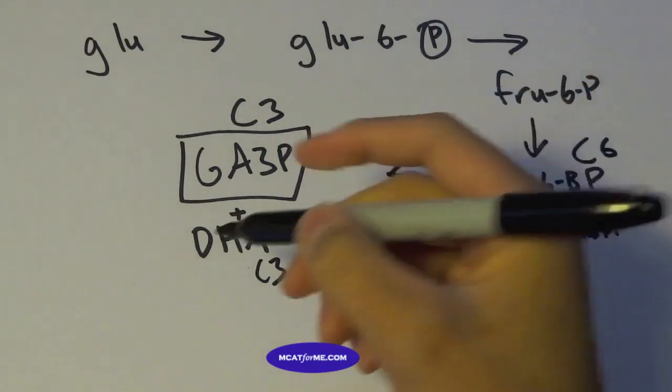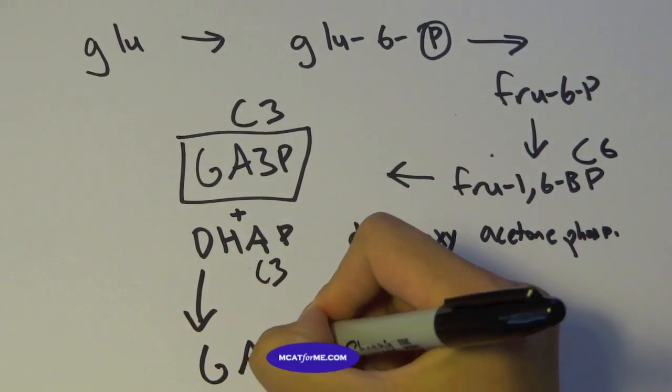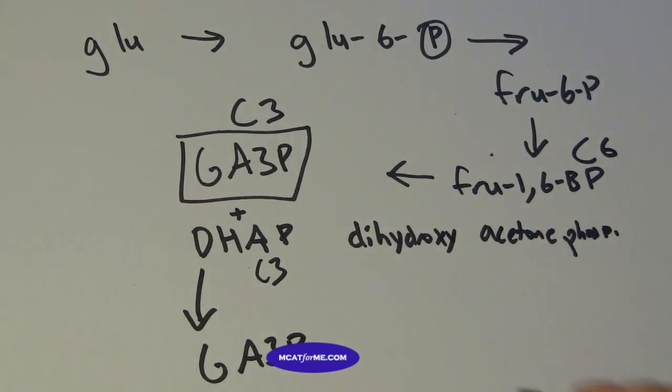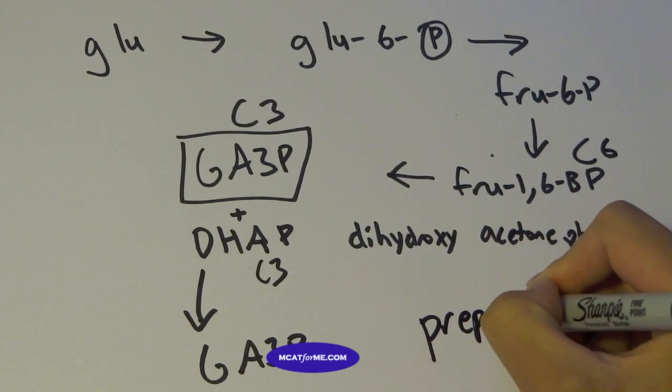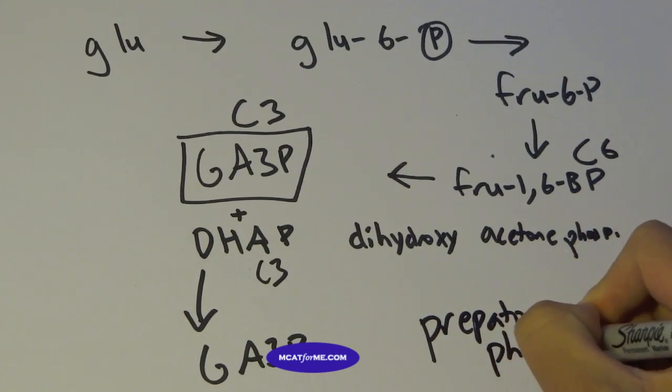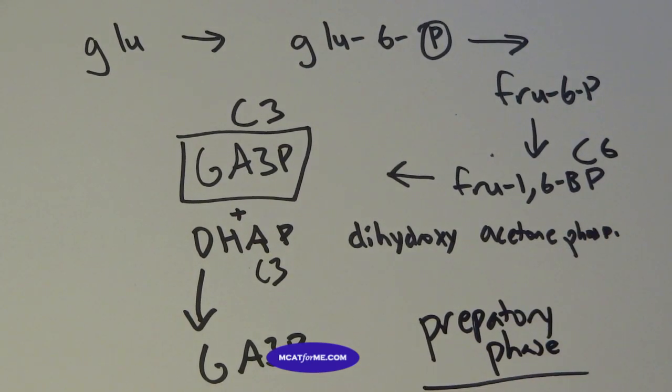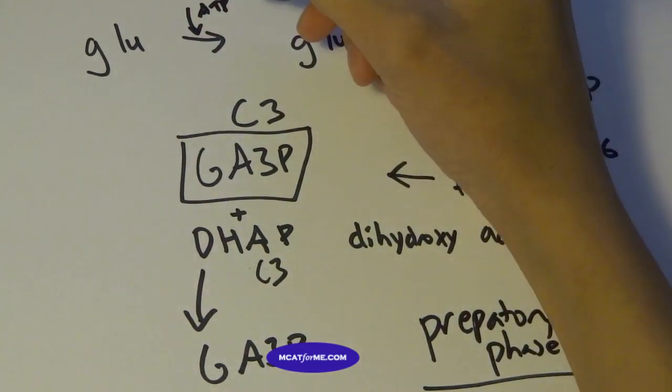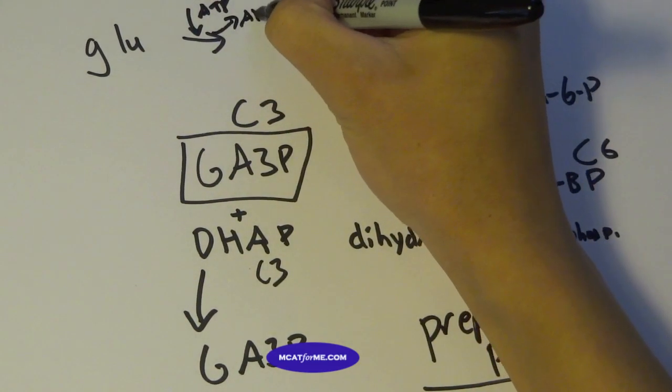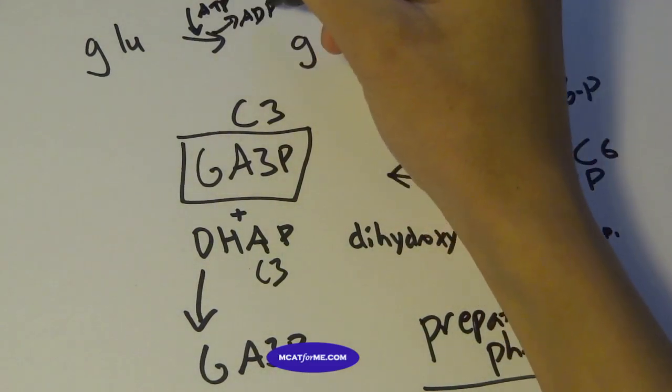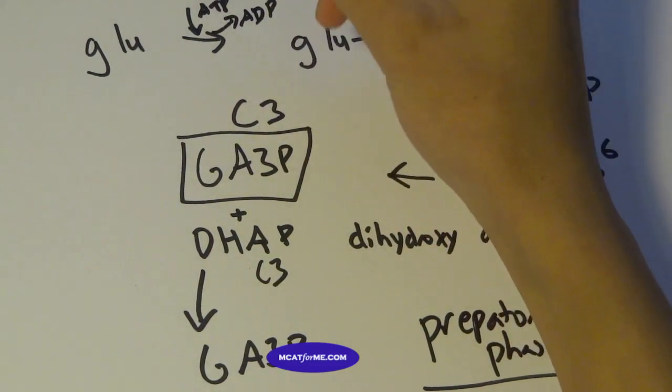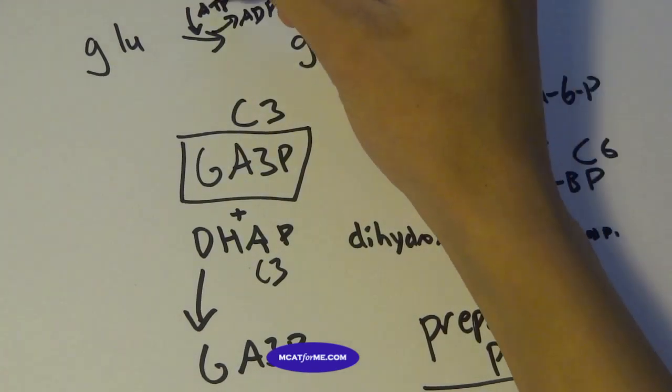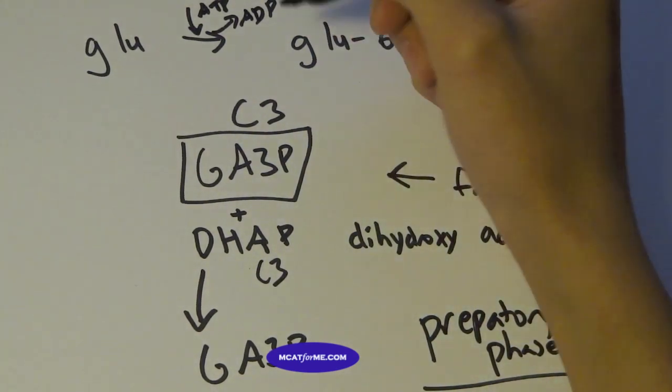And so eventually, we're going to actually convert DHAP into GA3P. So we're going to have 2 GA3P molecules. And this is considered our preparatory phase. And another thing to note is this. We're going to have an ATP coming in here. And whenever we have ATP hydrolysis, we're going to also have an ADP coming out. And you see ATP is adenosine triphosphate. And this is adenosine diphosphate. So obviously, there's a phosphate that went somewhere. And if we see, it went right there.